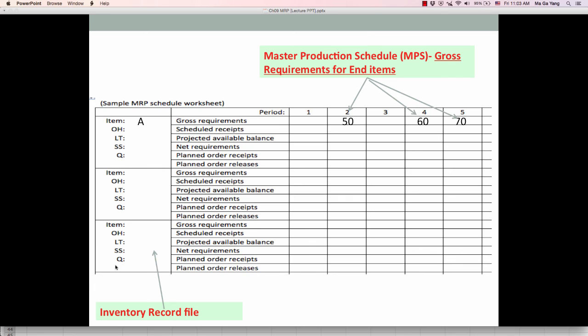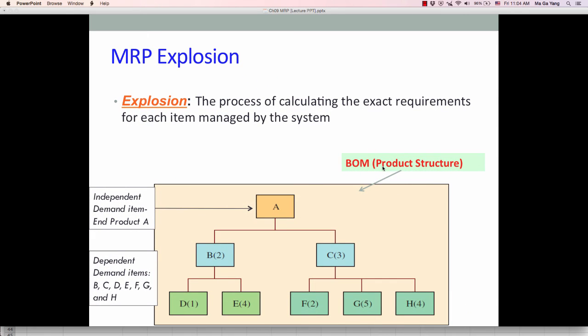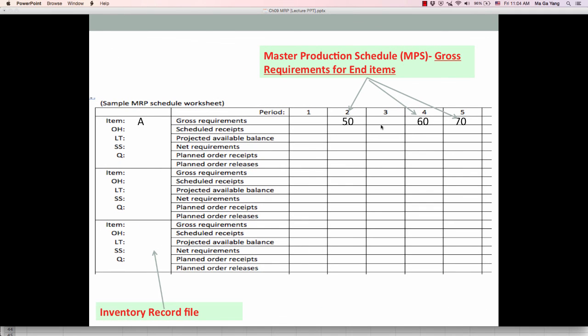And then inventory record file. So this is about inventory related information. So on-hand inventory is beginning inventory, and then lead time information, and safety stock information, and quantity to order information. These are all related to inventory transaction. So these three major inputs are required for calculating MRP explosion. Again, BOM, and then master production schedule information, which is end item gross requirement, and then inventory record file.